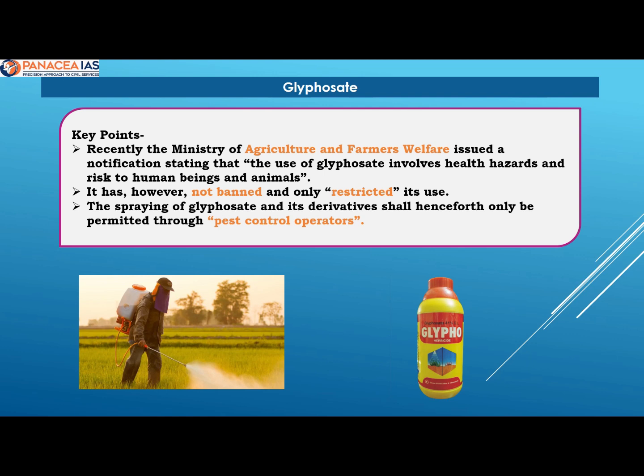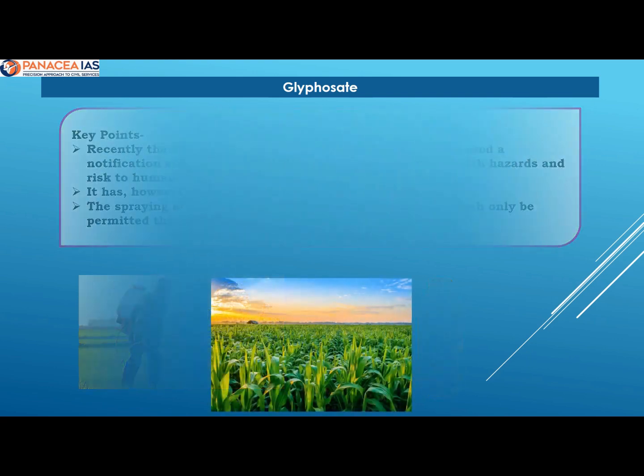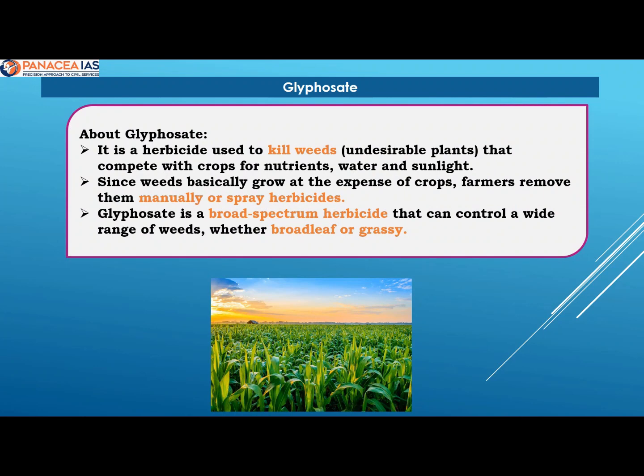Normal farmers can't use it through spraying. Now, let's understand this Glyphosate. Glyphosate ka use weeds ya undesirable plants ko khatam karne ke liye kiya jata hai, taaki ye desirable crops ya plants ki growth ko hinder na kar payen. Ye desirable plants ke saath sunlight, water, or nutrients ke liye compete karte hai. Isi liye farmers ya to in weeds ko manually remove kar dete hai, ya phir herbicide spray karke inhe khatam kar dete hai.